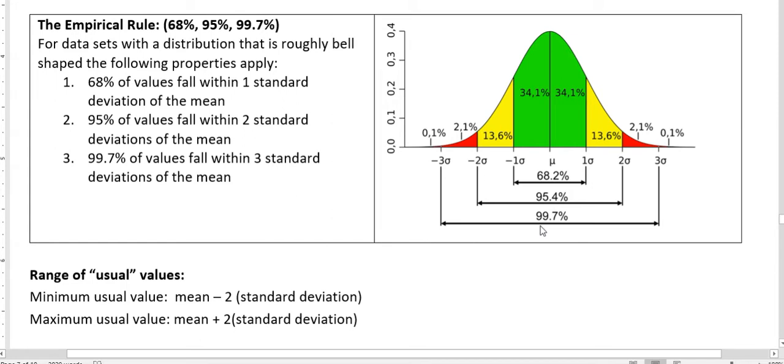So when we talk about range of usual values, we're talking about two standard deviations below up until two standard deviations above, and anything outside of that is not considered to be part of our usual values.